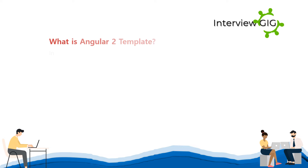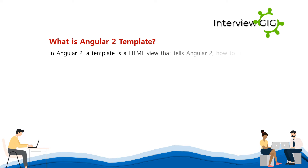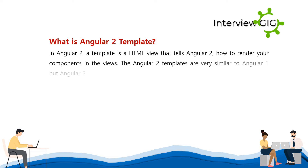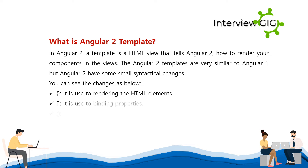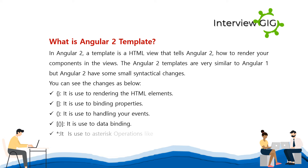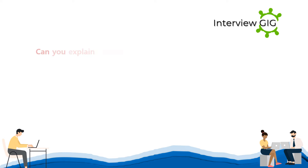What is an Angular 2 template? In Angular 2, a template is an HTML view that tells Angular 2 how to render your components in the views. Angular 2 templates are very similar to Angular 1, but Angular 2 has some small syntactical changes. Templates are used for rendering HTML elements, binding properties, handling events, data binding, and asterisk operations like ngFor.